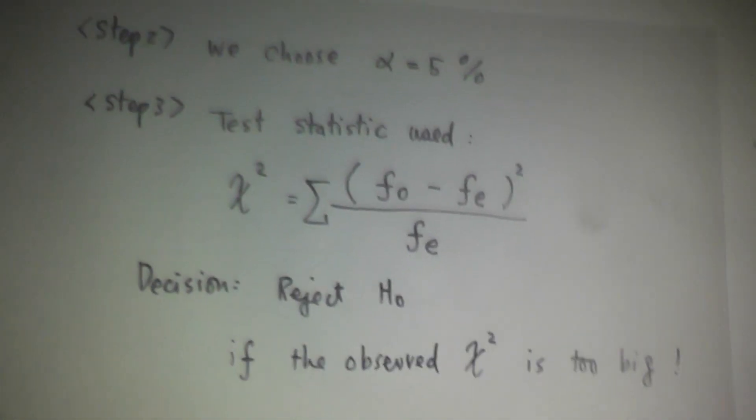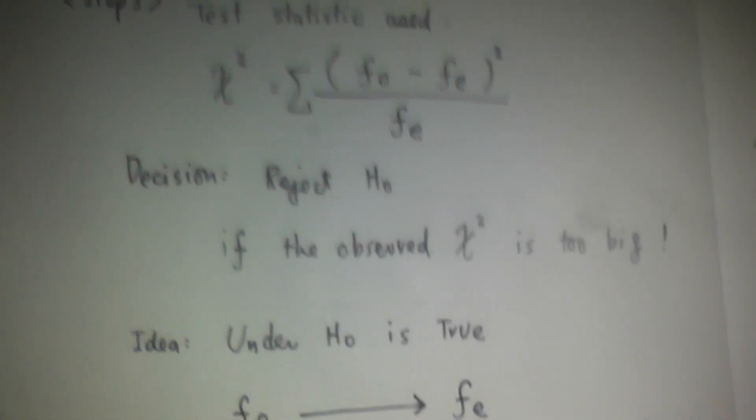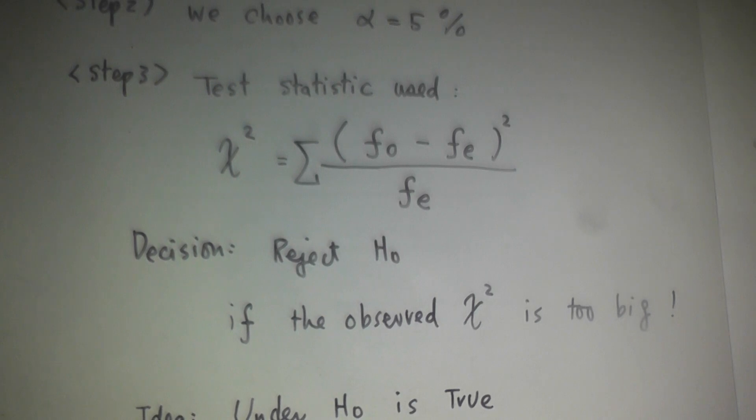Okay, let's go back to step three. What we just covered in step three, the decision is we reject H0 if the observed chi-squared is too big. Now let's proceed to step four.